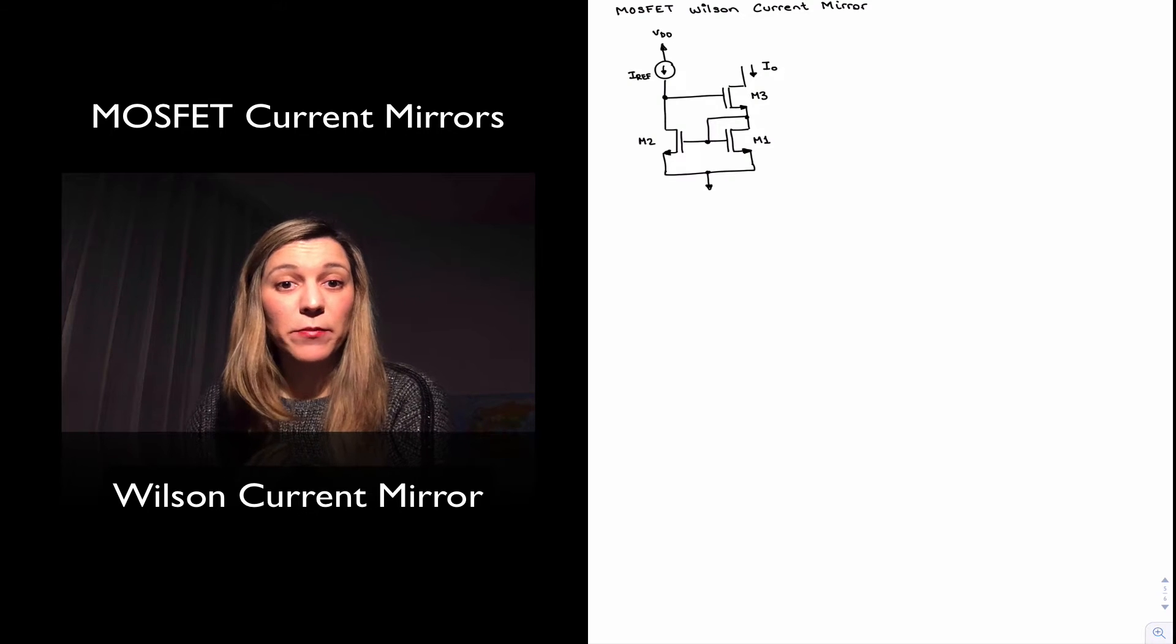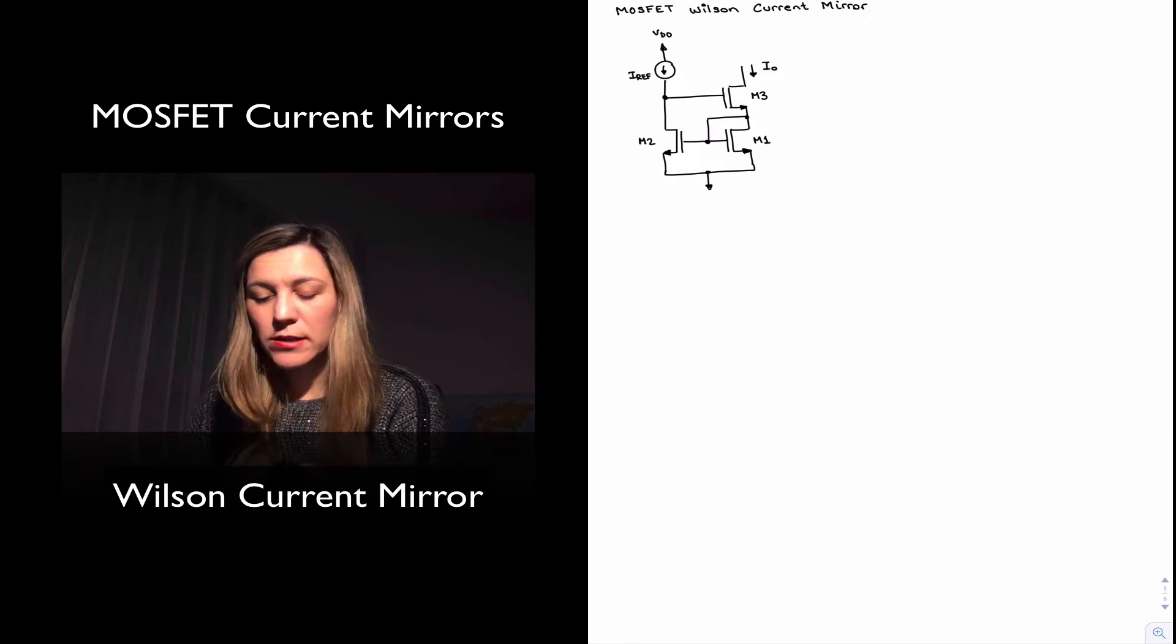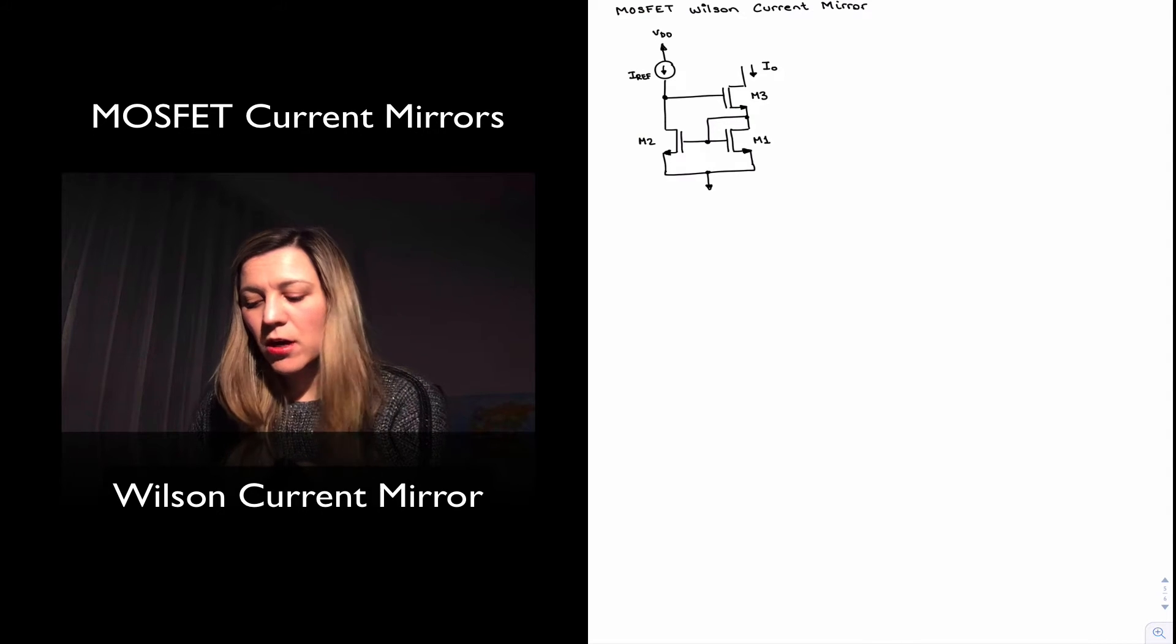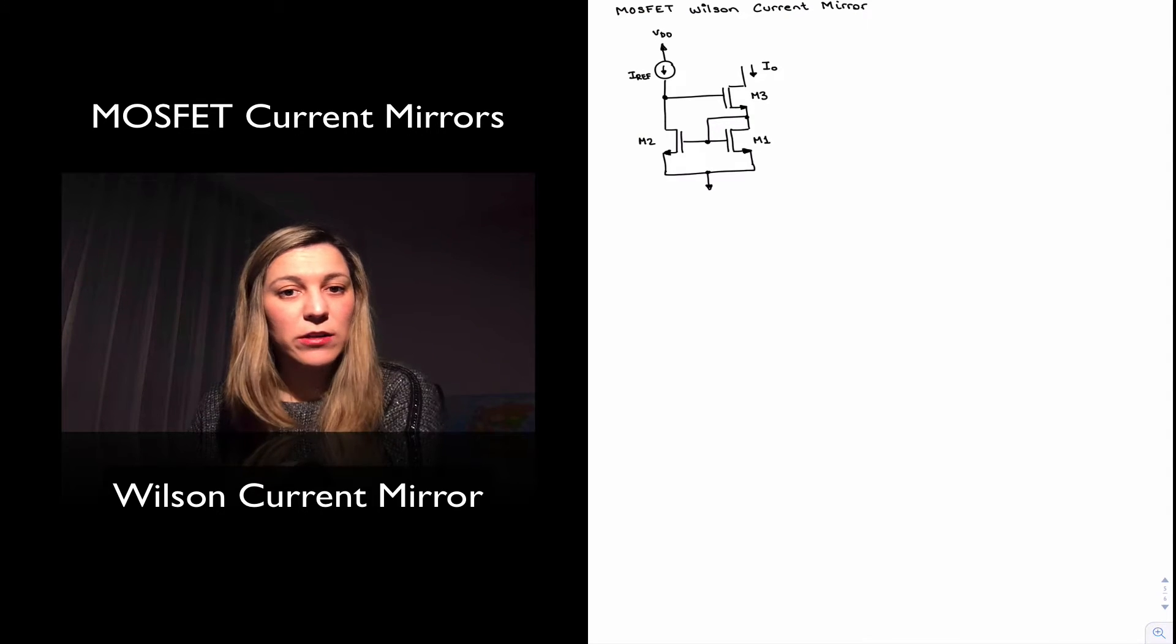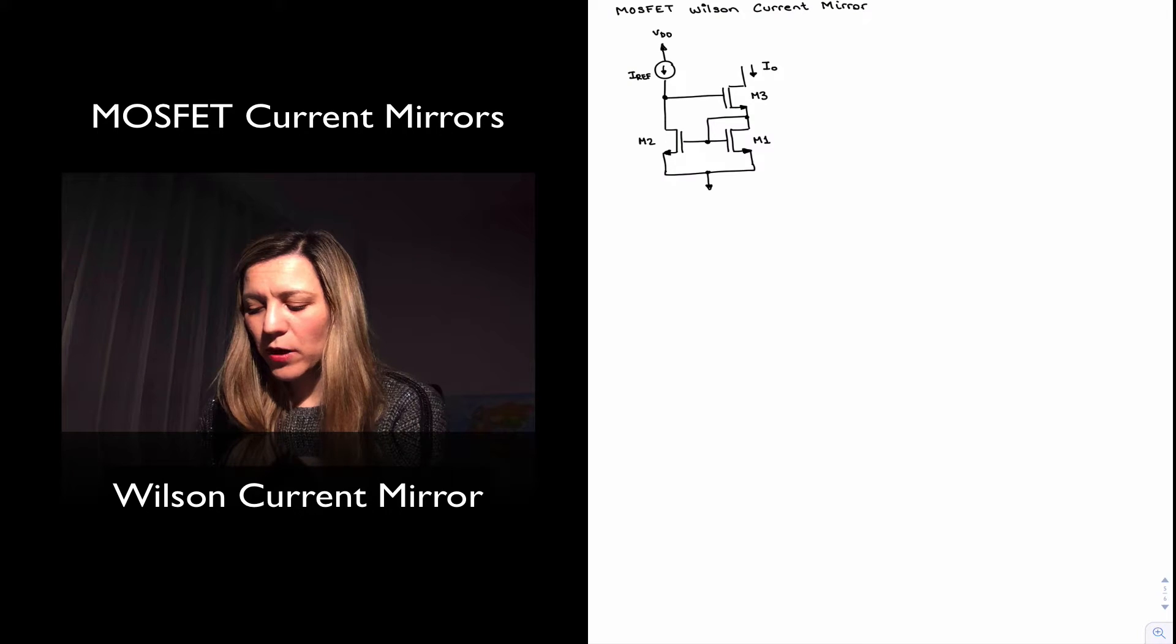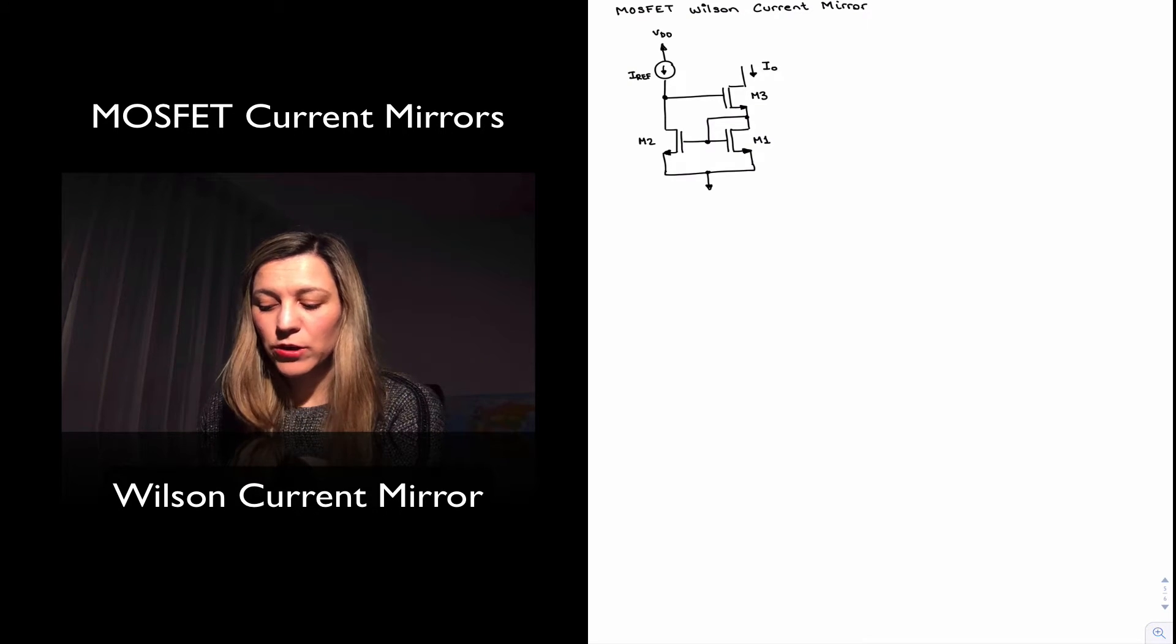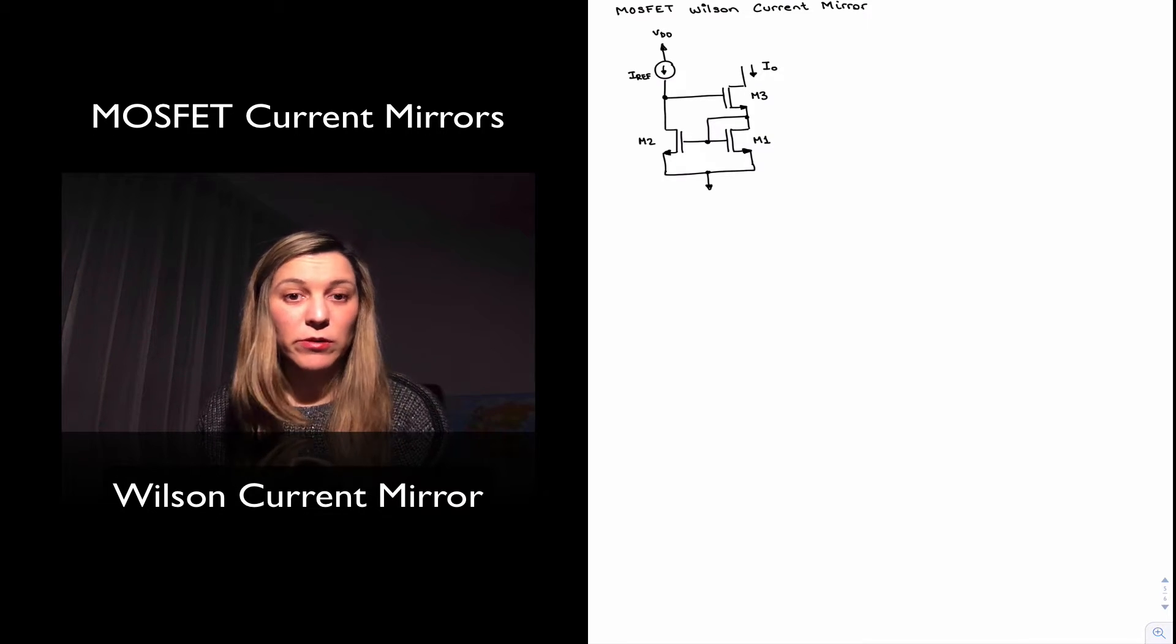We already saw this current mirror for the case of the BJT transistor as well. It is the exact same configuration where we have our reference current IREF, which could be implemented in different ways, for example, just simply a resistor. And then we have M1 and M2, M1 being a diode-connected transistor, M2 being the mirror transistor.